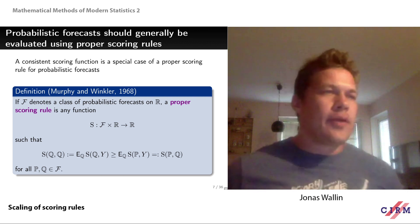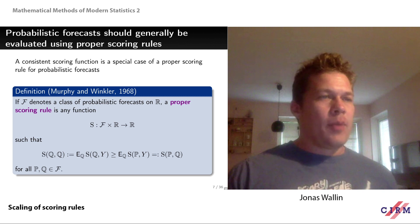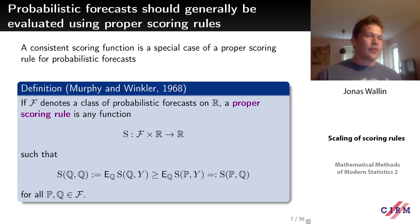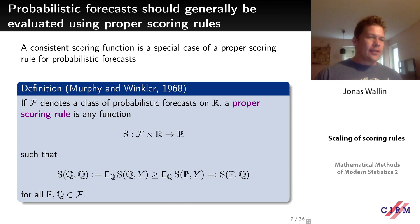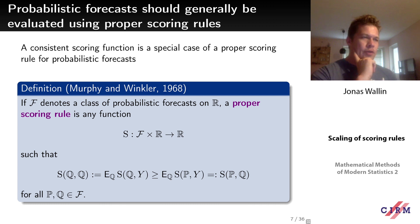Formally, a proper scoring rule is any function that takes a scalar observation and a probabilistic forecast and returns a scalar, such that if Y has distribution Q, then using Q as the forecast — i.e., the expectation of the score under the true distribution Q — we can't do better with any other distribution. The inequality is not strict in general.